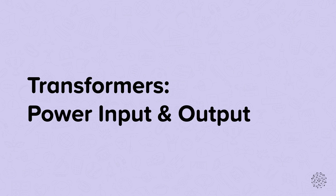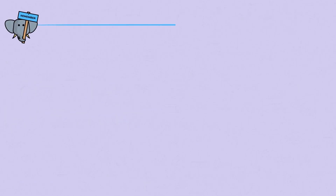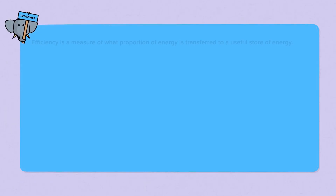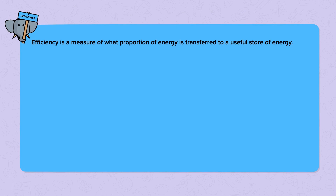Transformers: power input and output. Remember, efficiency is a measure of what proportion of energy is transferred to a useful store of energy. No energy transfer is 100% efficient, as energy is always wasted.